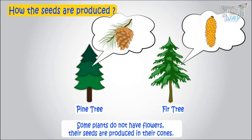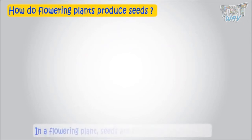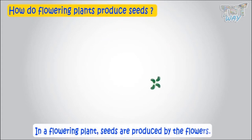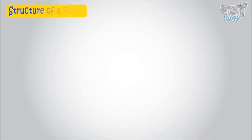Now we will learn how flowering plants produce seeds. In a flowering plant, seeds are produced by the flowers. So today we will first learn the structure of a flower, and then we will learn how seeds are produced by a flower.